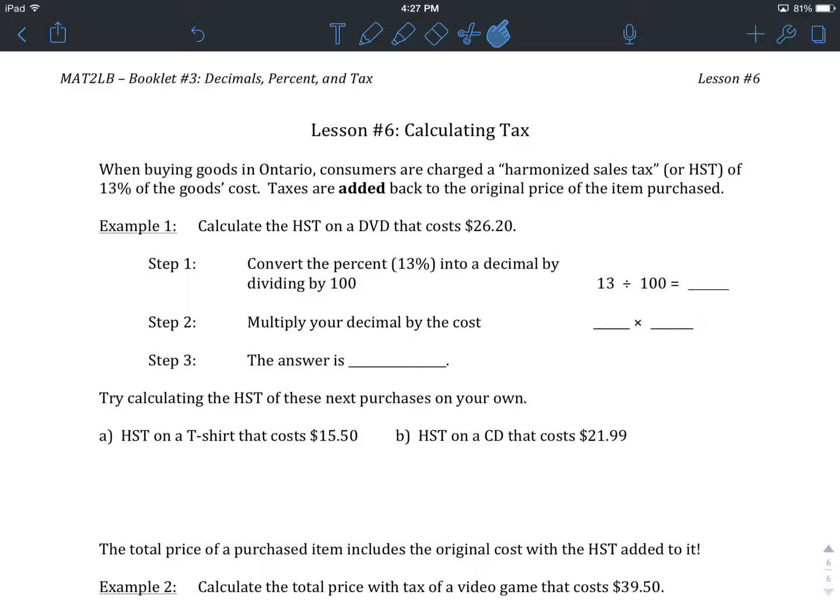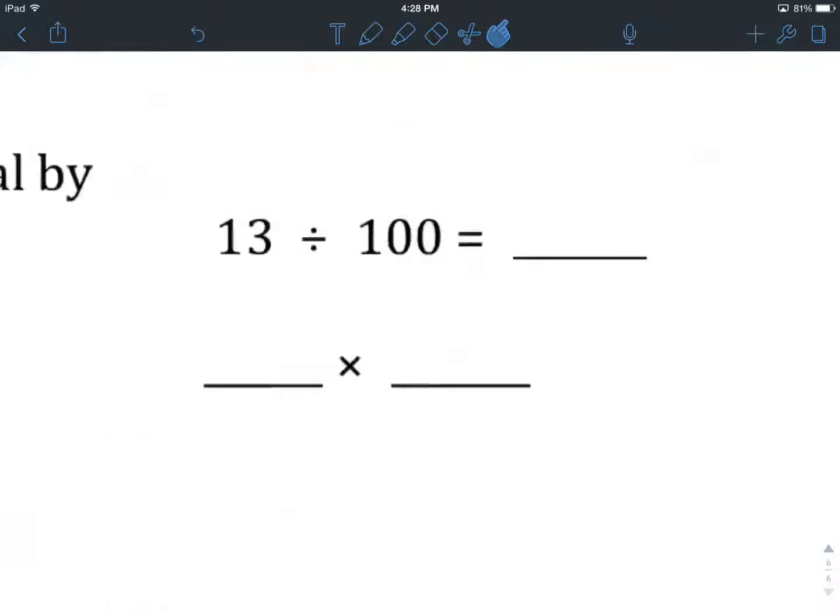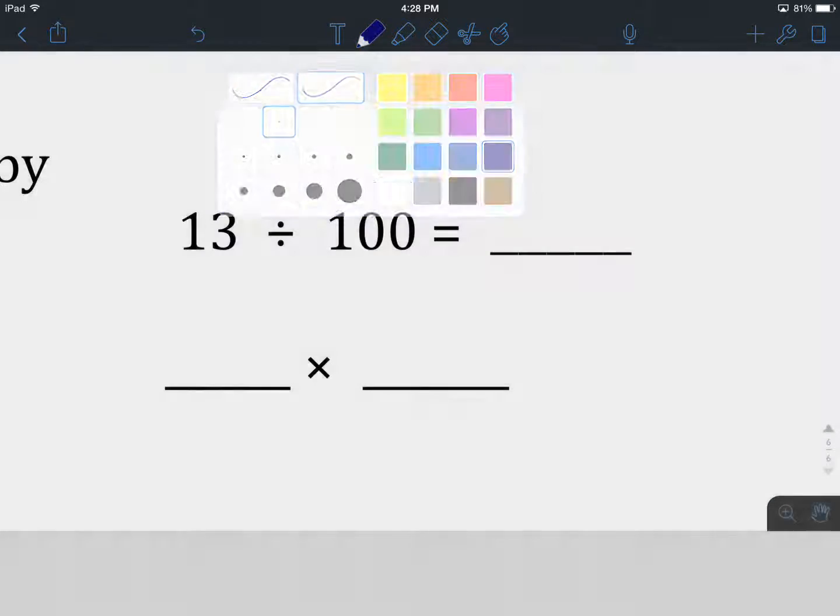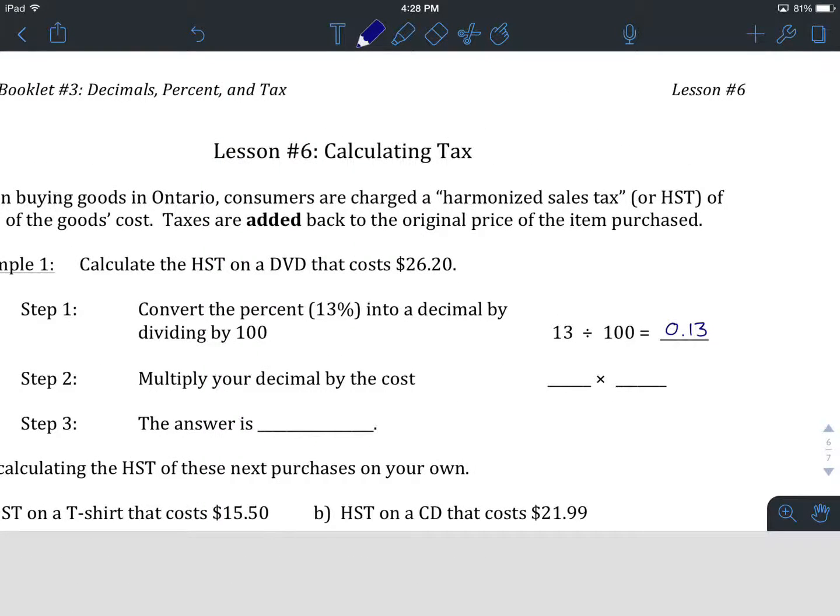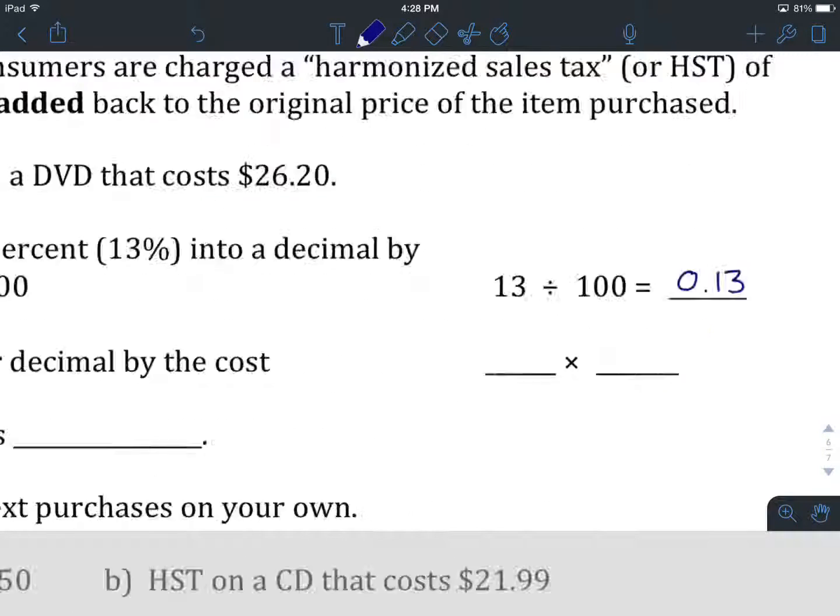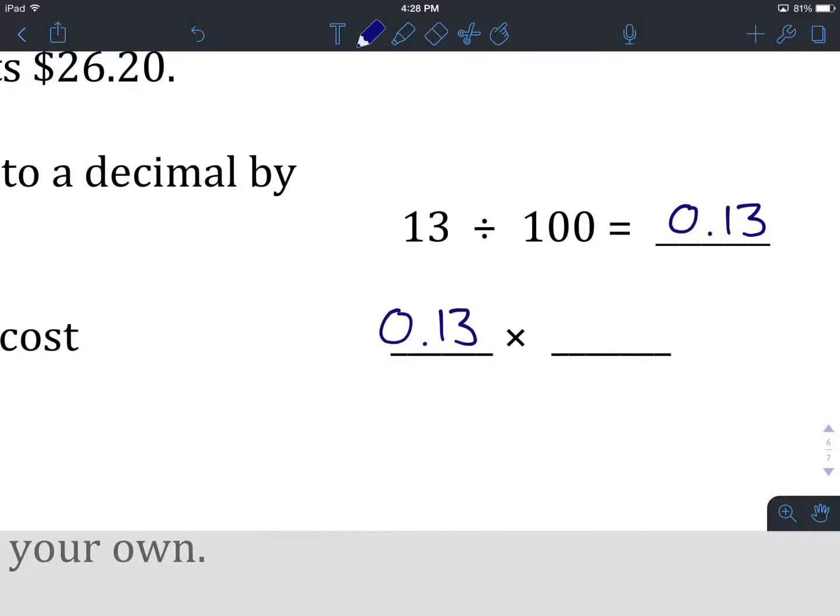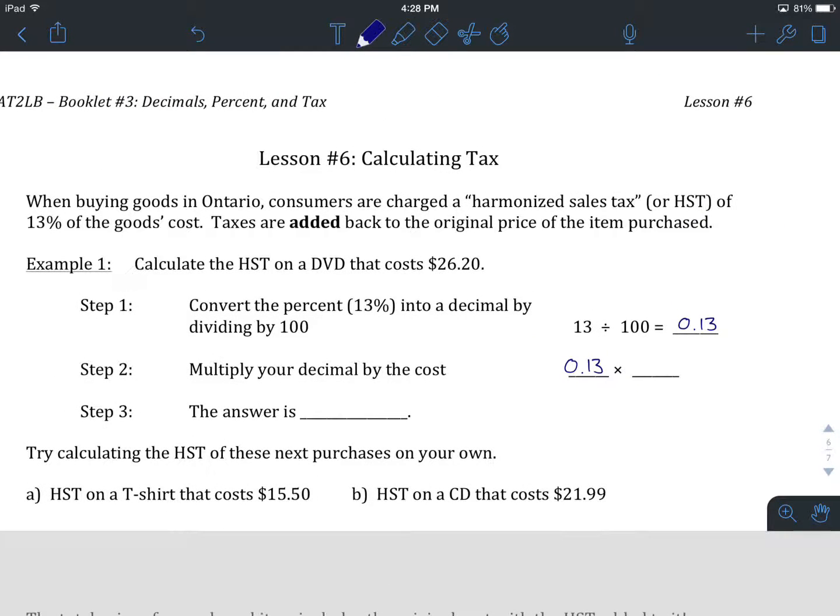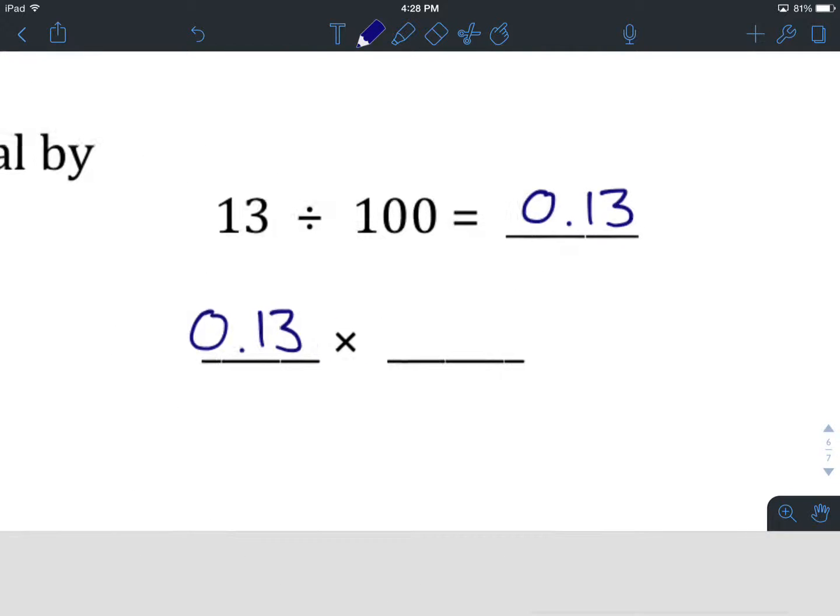If we wanted to calculate how much HST, or tax, is going to be applied to that DVD, we start by converting our percent, which is 13%, into a decimal by dividing by 100. We've done this in a couple of lessons now, and dividing 13 by 100 gives us 0.13. From there, we take the decimal, 0.13, and we multiply it by whatever the cost is of the item that we're paying HST on. In this case, it's a DVD. It's going to be multiplied by $26.20, and that's what we type into our calculator. 0.13 times $26.20.